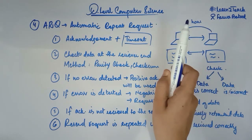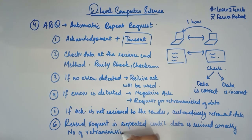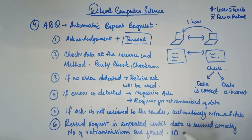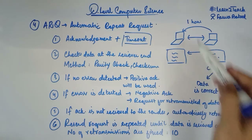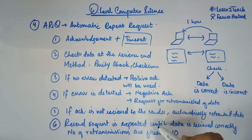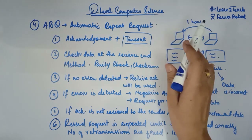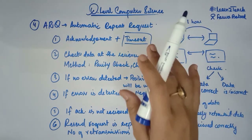One more thing: you define the number of retransmissions — that is, how many times retransmission is allowed. For example, if we define that the sender can retransmit the data only 10 times, and the sender has transmitted 10 times but still did not get a positive acknowledgement, then there will be no more retransmissions. When the limit is reached, the data will not be retransmitted again, no matter whether it was correctly received or not.